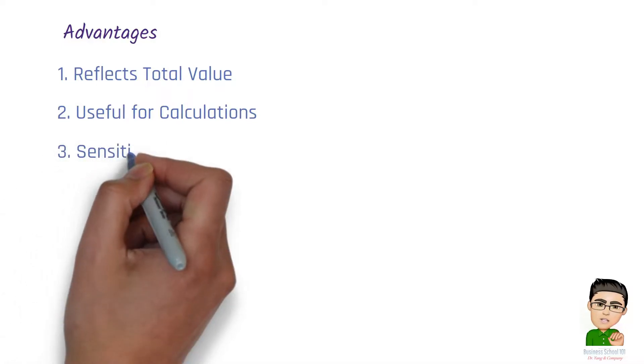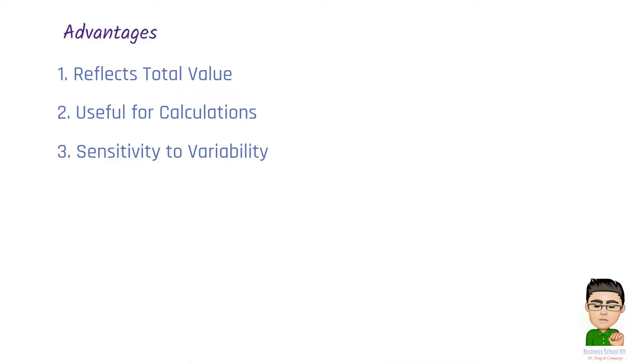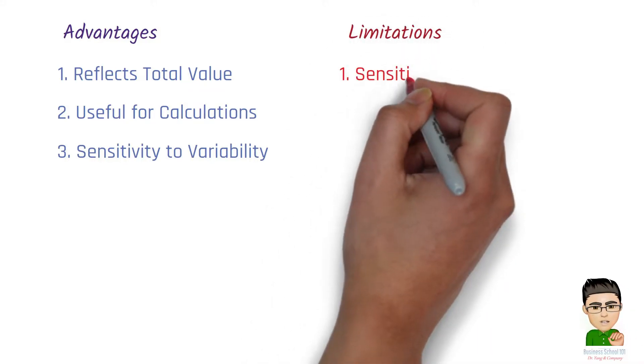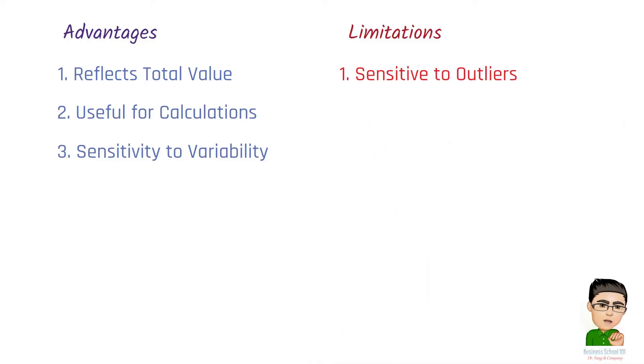Number 3, Sensitivity to variability. It can detect small changes in data values, making it valuable in quality control and research. On the other side, the limitations of mean include: Number 1, Sensitive to outliers. Outliers or extreme values can significantly affect the mean, making it less robust in the presence of outliers.